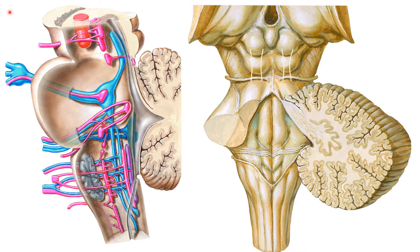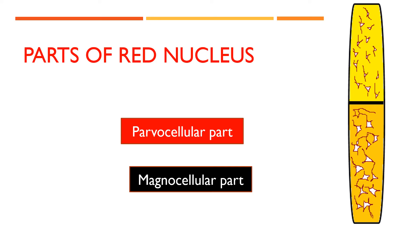Here you can see how the red nucleus is present in terms of its location, extension, and position. Now moving to the parts of the red nucleus.